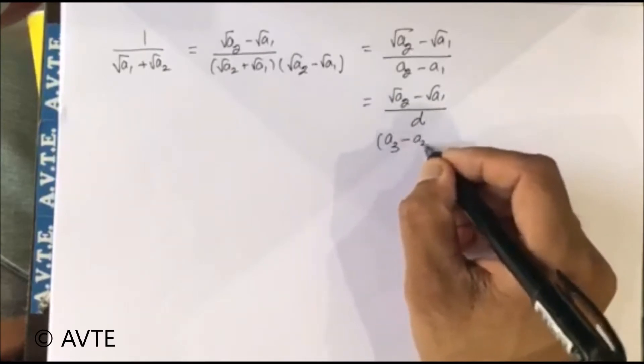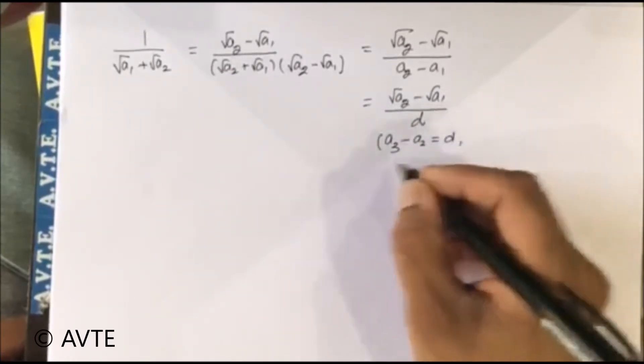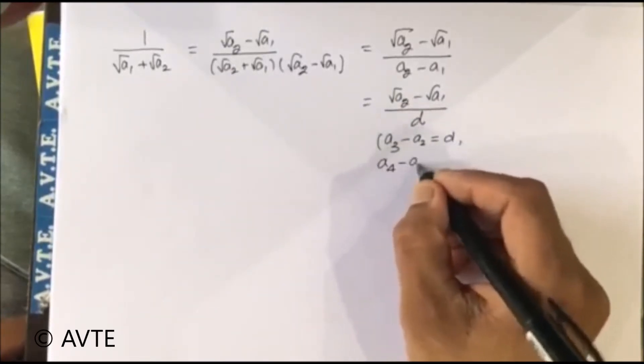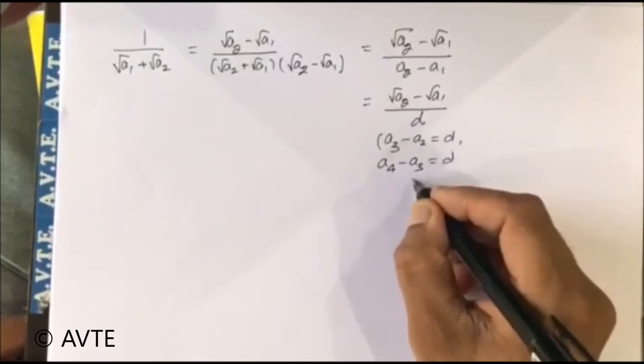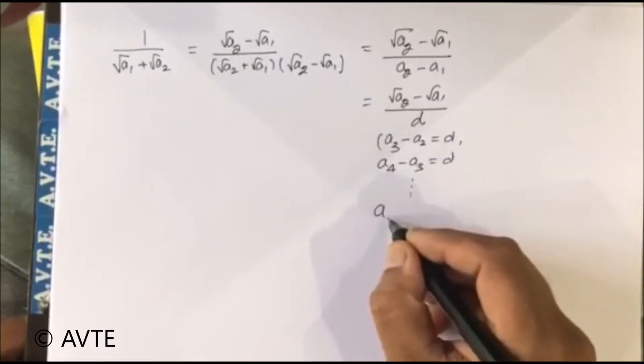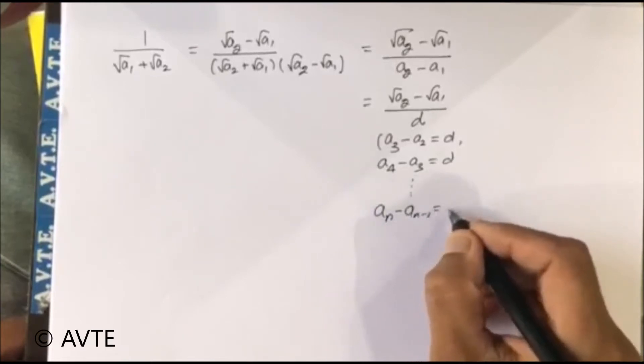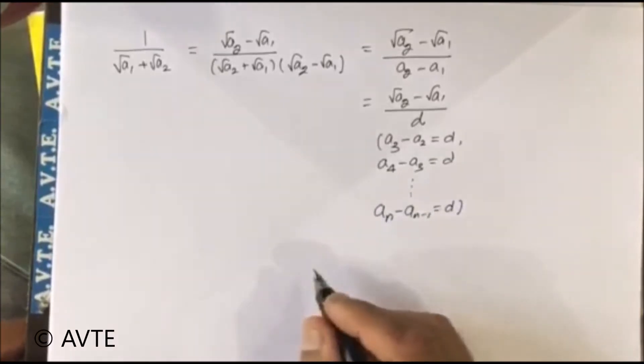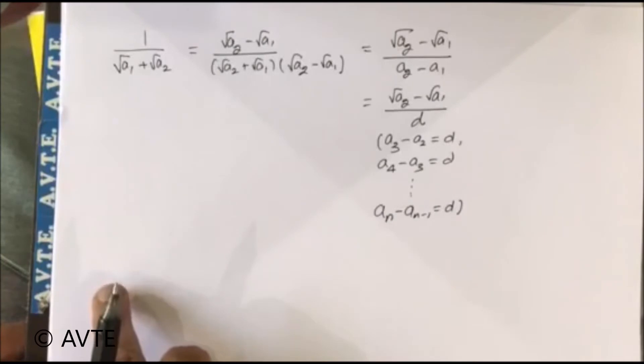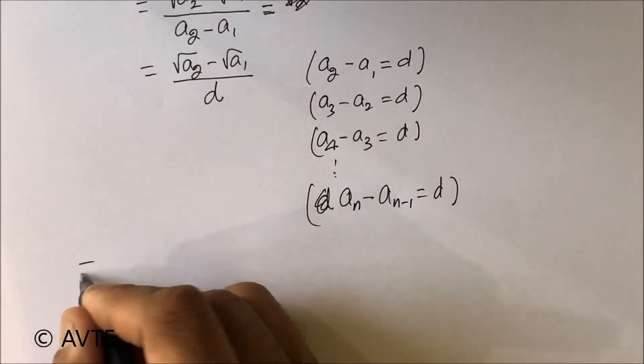Similarly, a₃ - a₂ is also d, a₄ - a₃ is also d, and so on. The last term aₙ - aₙ₋₁ is also d. So we can generalize it and write the series. When we expand, we get: